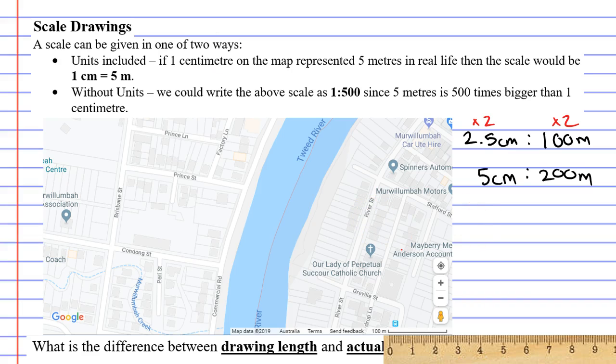And I'm actually going to simplify this again. I'm going to divide by 5 because 5 divided by 5 gives me 1 centimeter and 200 divided by 5 will give me 40 meters. We learned that 1 centimeter on the map represents 40 meters in real life.